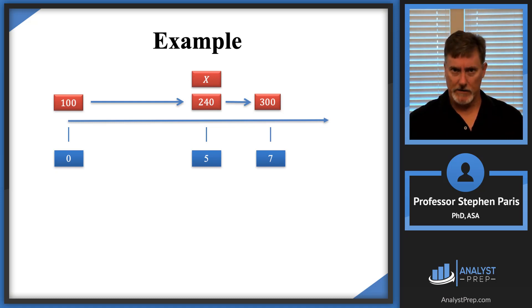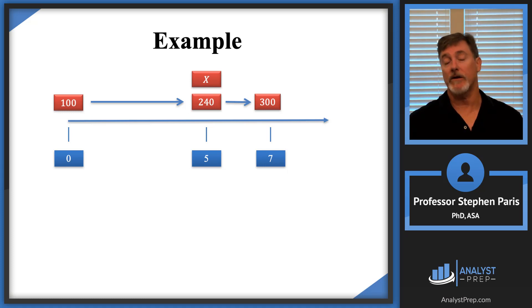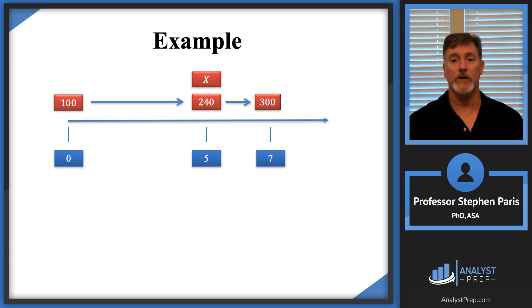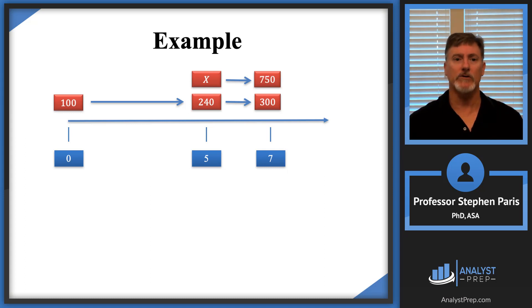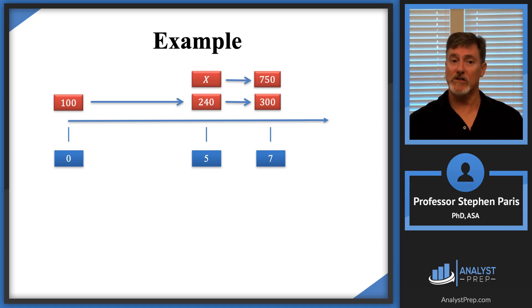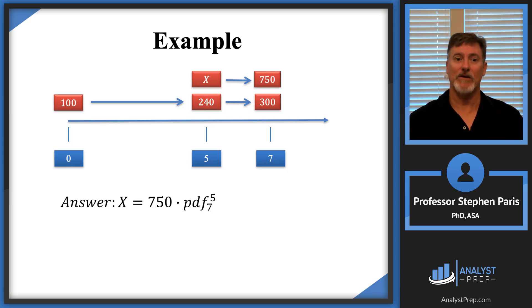With 1,050 at time 7, and knowing that 300 of that comes from the accumulation of the initial 100, the amount that cap X must have accumulated to is 1,050 minus 300, which is 750. So cap X is just 750 discounted back from time 7 to time 5 — that's 750 times the periodic discount factor from time 7 to time 5.